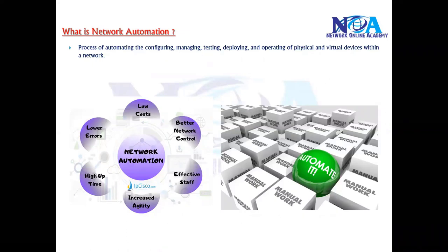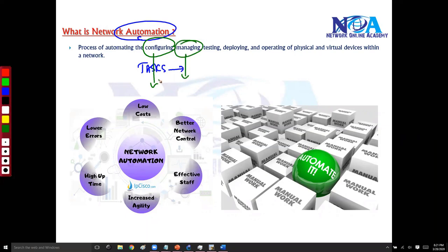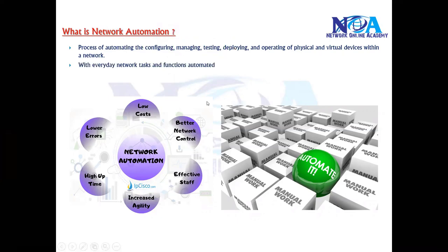Simply put, network automation is the automation of your tasks. The name itself says it's a process of automating most tasks — like changes can be automated by software, you can manage your network automatically without going to each device, you can automatically test things, and even automatically deploy any new device with its own configurations within the network.